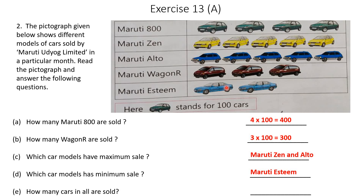How many cars in all are sold? Count all the cars in the picture and multiply by 100. There are 19 cars shown in the pictograph, so 19 multiplied by 100 gives 1,900. There are 1,900 cars sold in all.